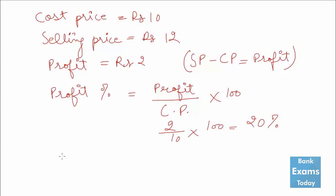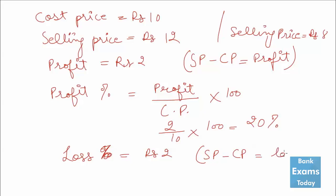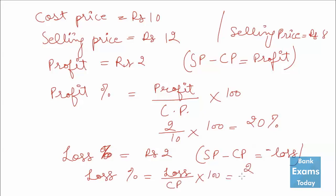In case of loss, if you want to calculate the loss percentage: the selling price is rupees 8 instead of rupees 12, so you are incurring a loss of rupees 2. The loss is SP minus CP, which will be negative, so it is a loss. The loss percentage formula is: Loss divided by Cost Price multiplied by 100. The loss is rupees 2, cost price is rupees 10, multiplied by 100 — that gives 20% as the loss percentage. Now we will do some simple questions.